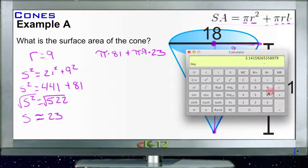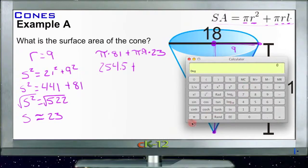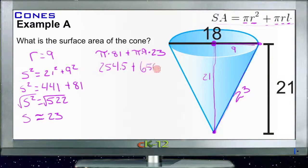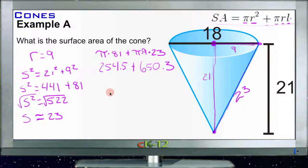We're going to do pi times 81 equals 254.5, plus pi times 9 times 23 is 650.3. So that gives us 650.3 plus 254.5 equals 904.8. So the surface area of the entire figure is about 905 units.